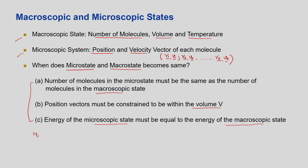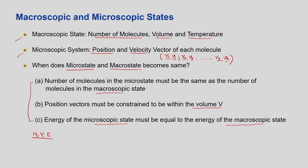If I specify number of molecules, volume, and total energy — these become the macroscopic state. It does not know where the molecules are, how they are arranged, what is their velocity or position. But overall we know: 100 molecules, volume of 1 cm³, and energy of 10 joules. The microstate means there may be many configurations of this macrostate where the N, V, E of each microstate is exactly the same as the macrostate.